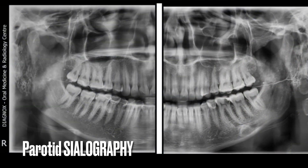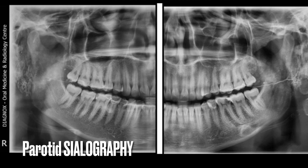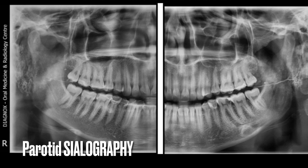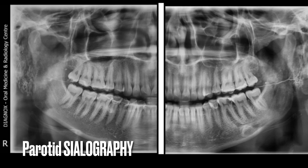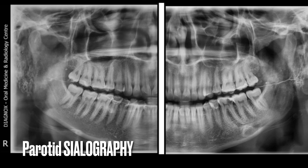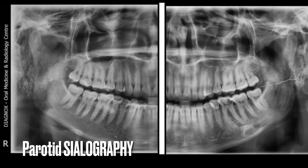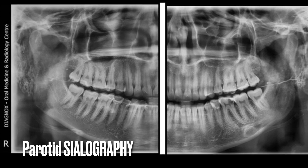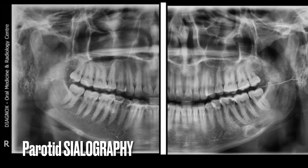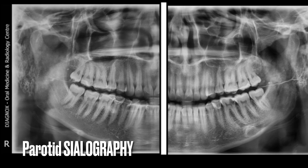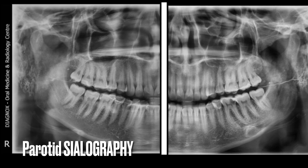An OPG was advised, which didn't show any significant findings. An MRI revealed normal ductal architecture and glandular structures. The patient was advised a sialogram. Sialography revealed ductal dilatation followed by stricture on the right side. Filling defects were seen in the duct just before it entered the gland, and focal collection of contrast medium was seen in both glands — features of sialadenitis and sialodochitis.